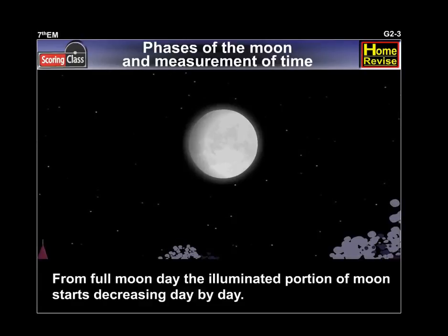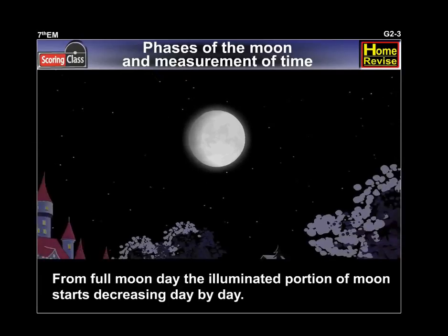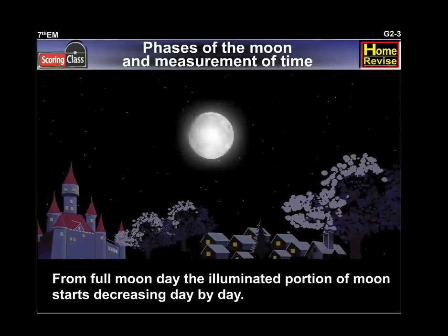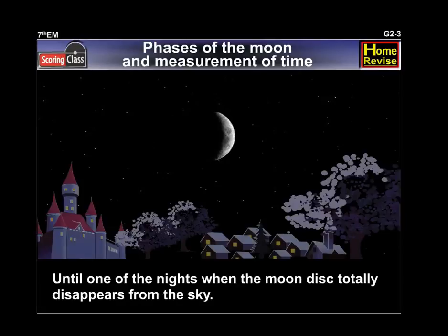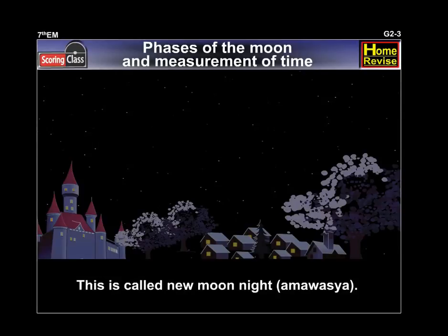From Full Moon Day, the illuminated portion of the Moon starts decreasing day by day until one of the nights when the Moon disk totally disappears from the sky. This is called New Moon Night or Amavasya.